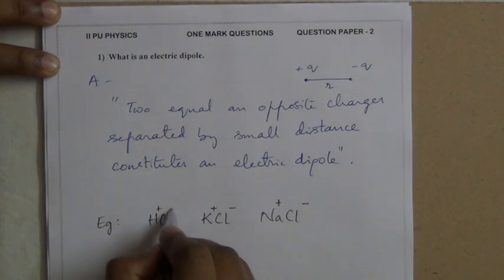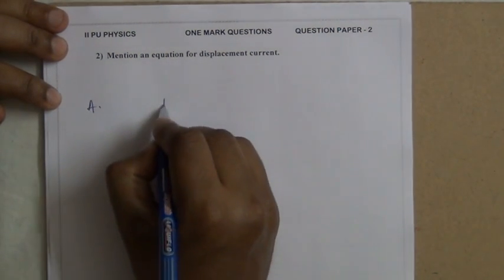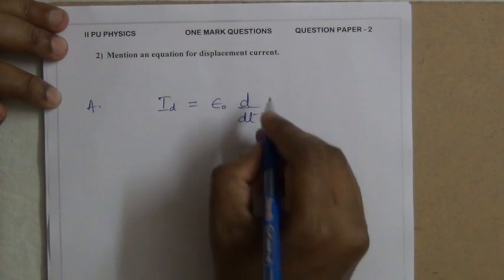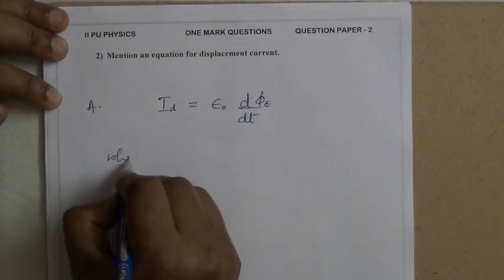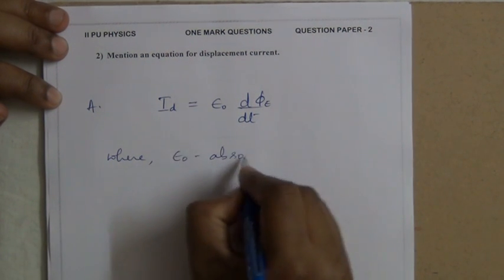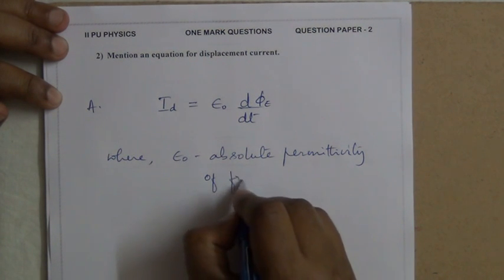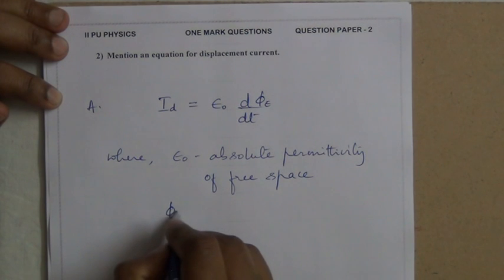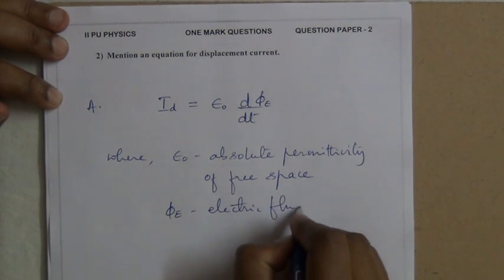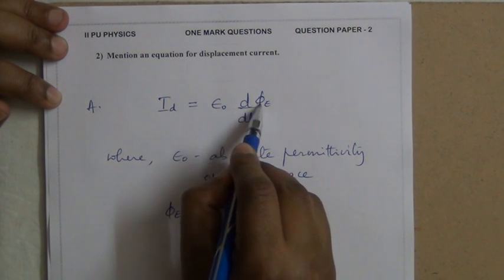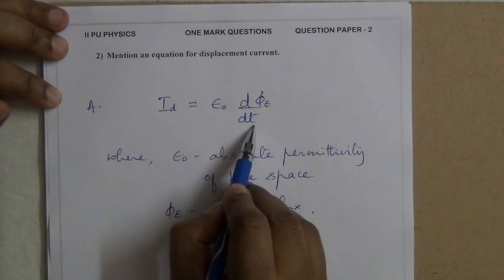Mention an expression for displacement current. The displacement current id is equal to ε₀ × d/dt(Φₑ), where ε₀ is the absolute permittivity of free space and Φₑ is the electric flux. The time rate of change of electric flux is responsible for displacement current.